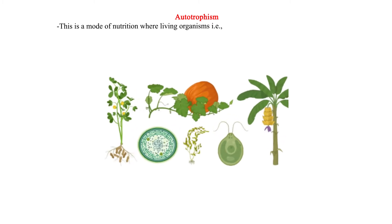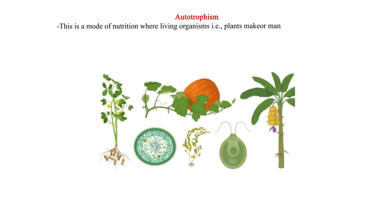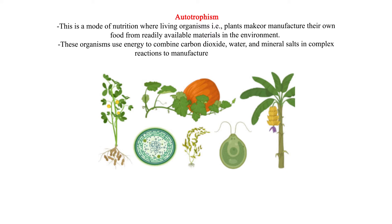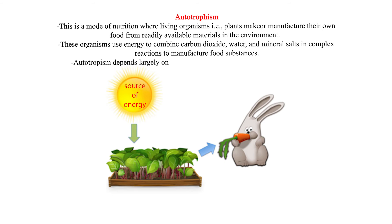Autotrophism. This is a mode of nutrition where living organisms, i.e., plants, make or manufacture their own food from readily available materials in the environment. These organisms use energy to combine carbon dioxide, water, and mineral salts in complex reactions to manufacture food substances. Autotrophism depends largely on the source of energy used to manufacture the food.